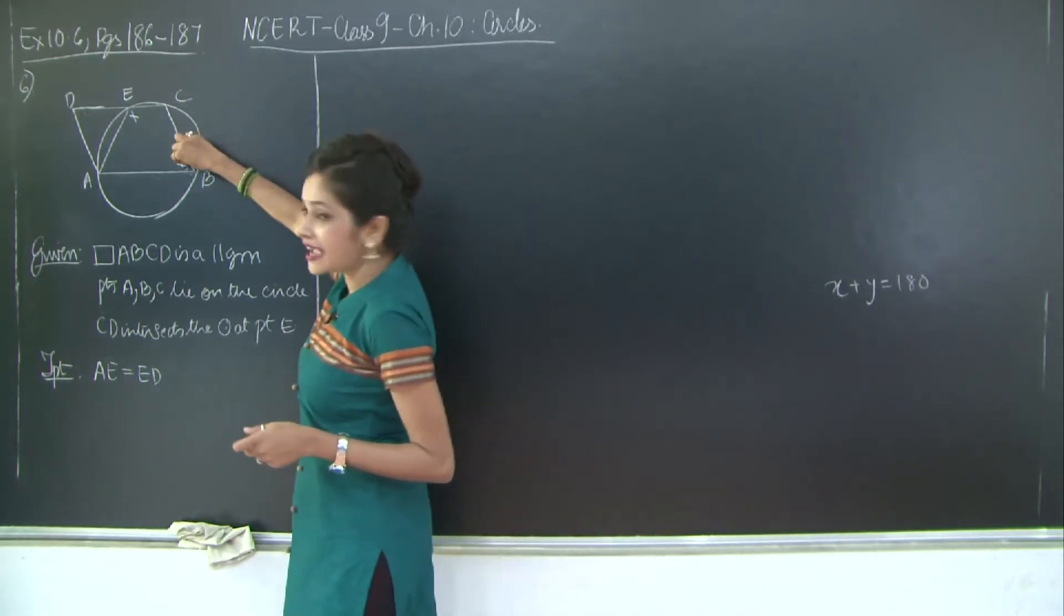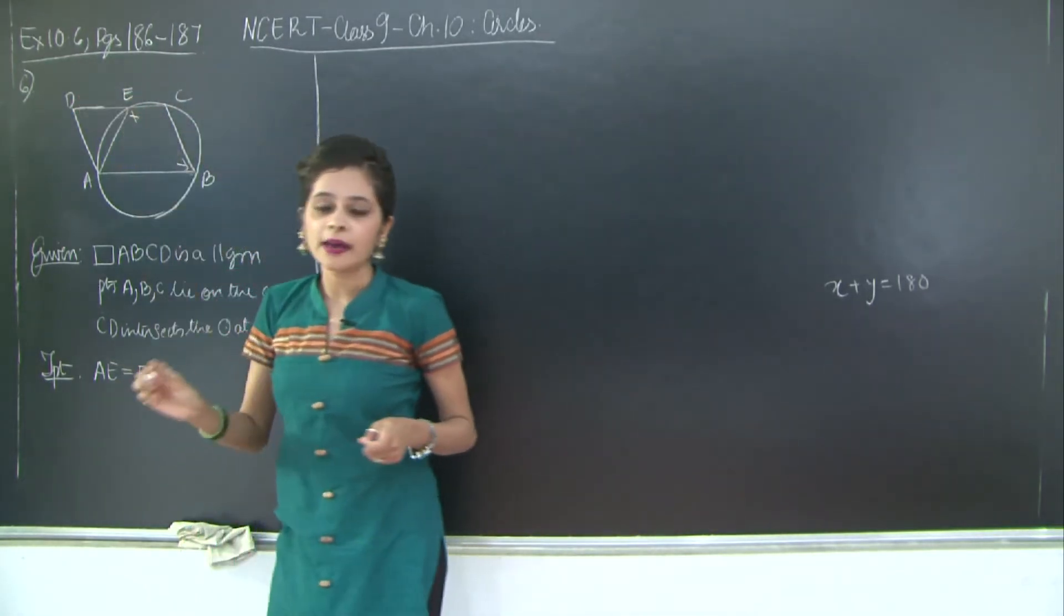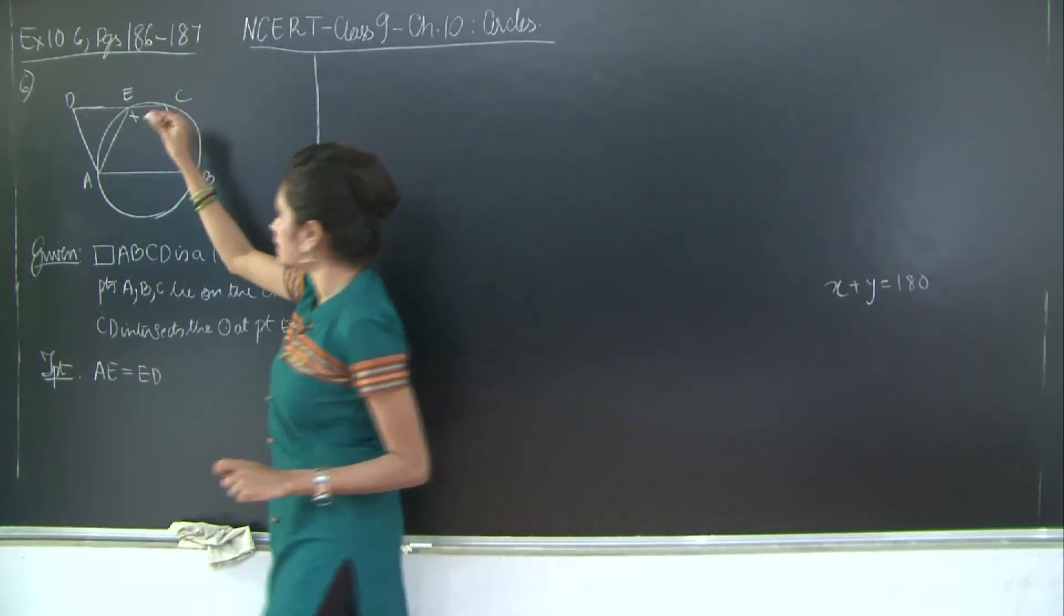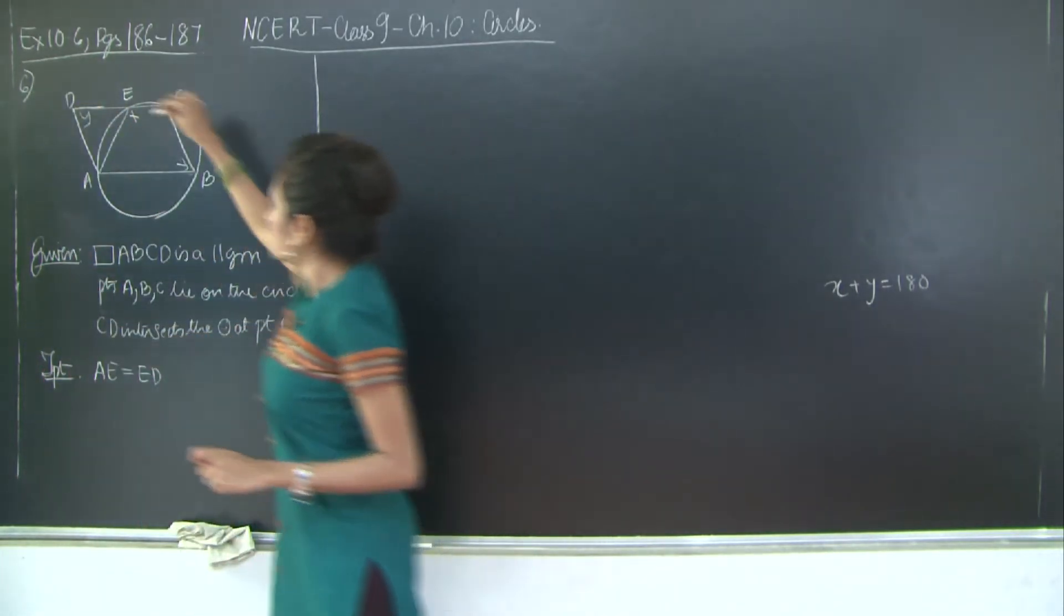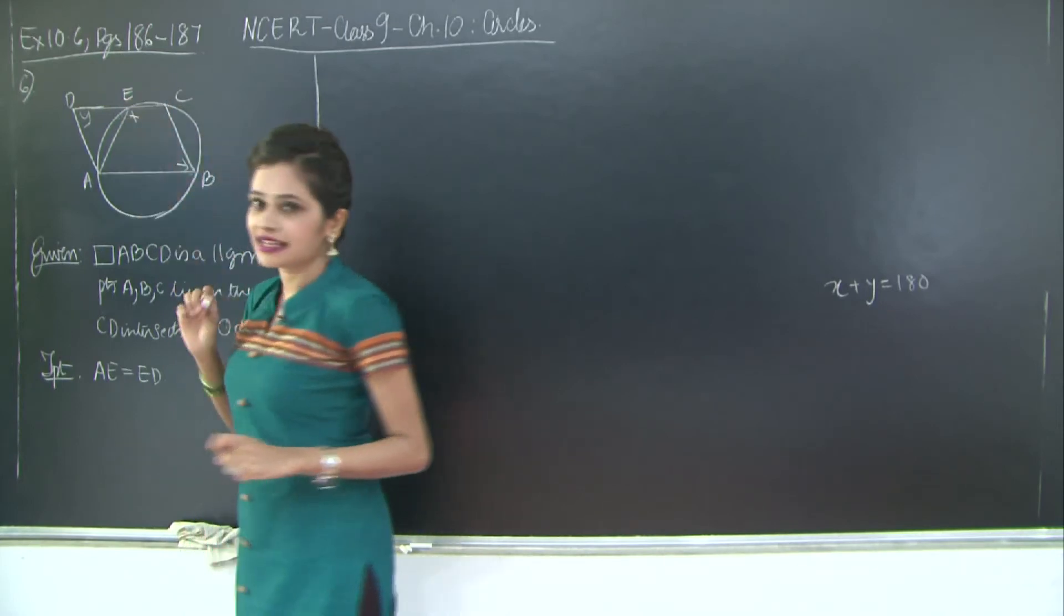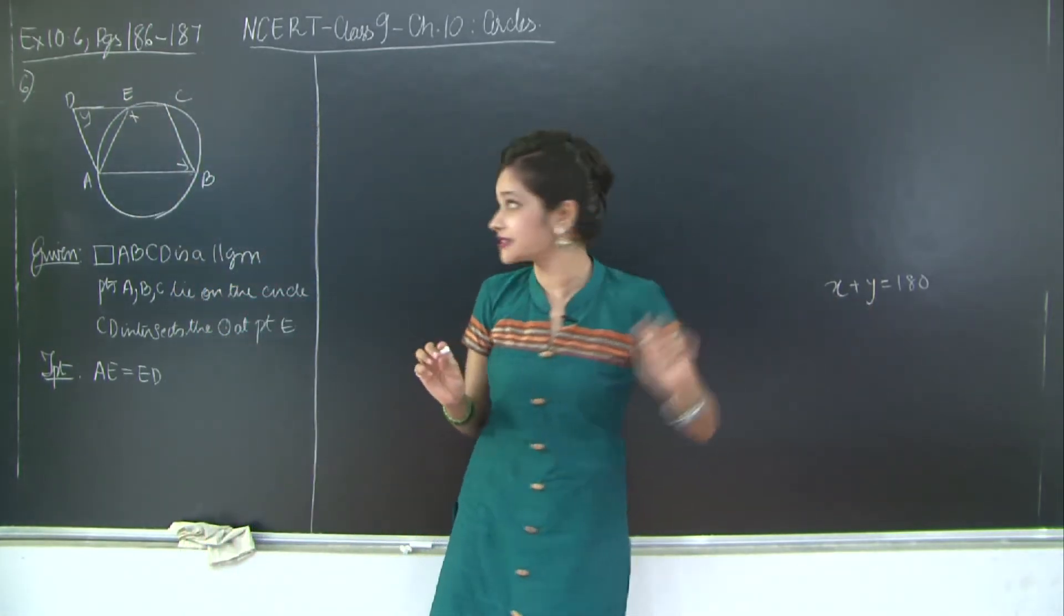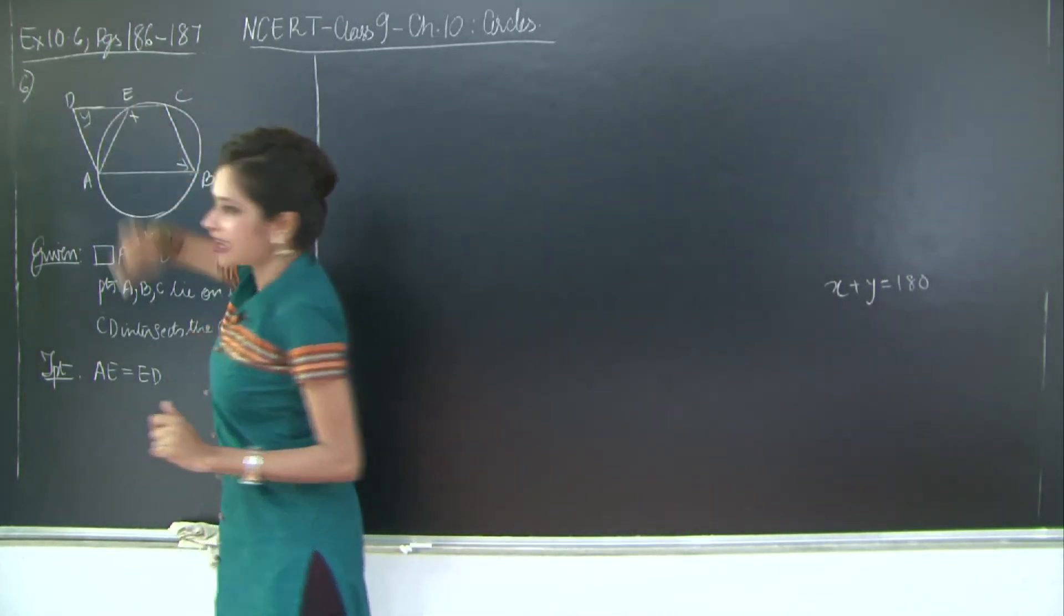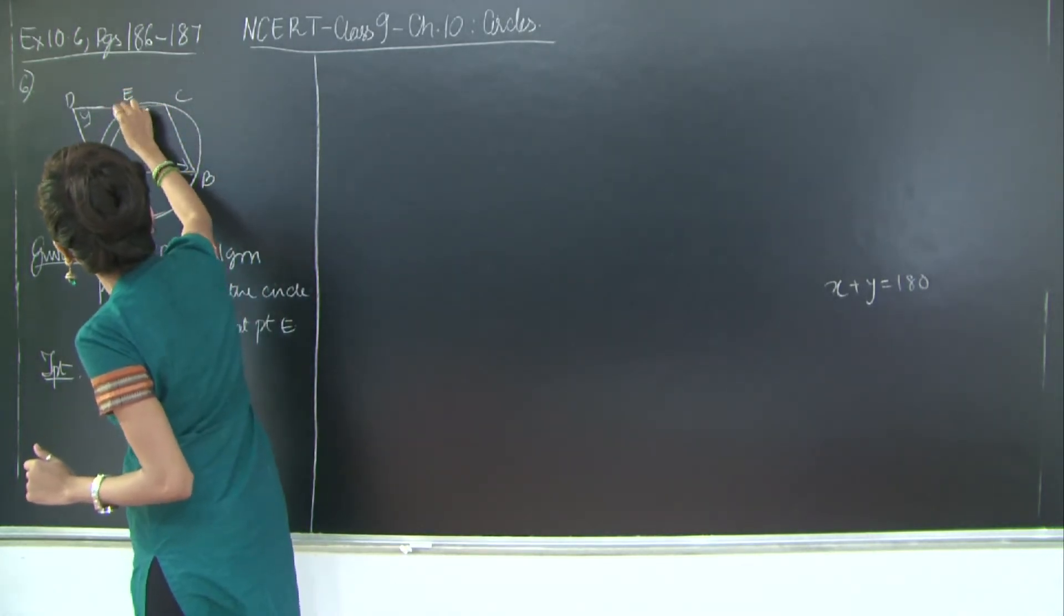But this angle and this angle, that is angle B and angle D, are equal because they are the opposite angles of a parallelogram. Now this angle is y, therefore angle D will also be y. Right? Therefore this angle plus this angle is 180 degrees. See you have x plus y is 180 degrees. But this angle plus this angle, let us call it z. Which angle? This angle out here.